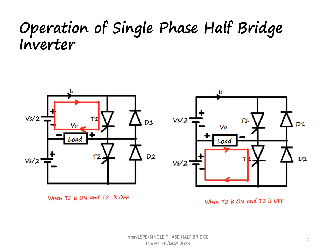Now let us see the operation of the single phase half bridge inverter. When T1 is turned on by giving the gate pulse and T2 is kept off, the current flows because of the upper source — from plus, through the thyristor T1, through the load, and back to the source.